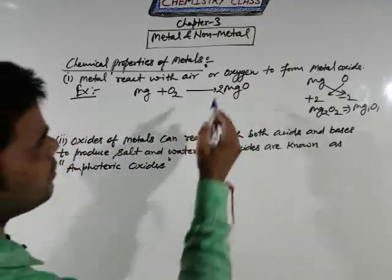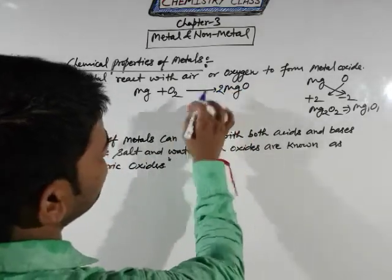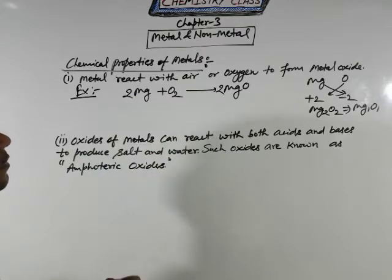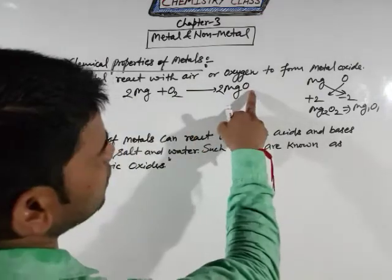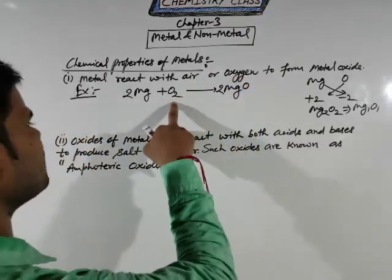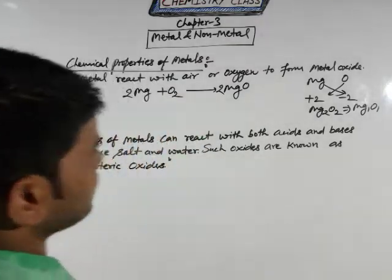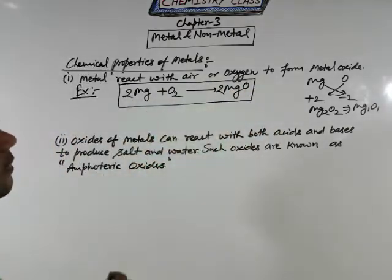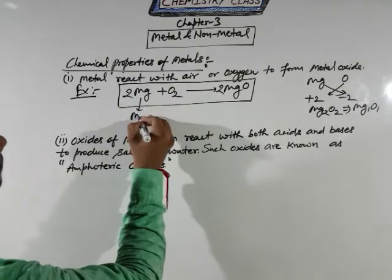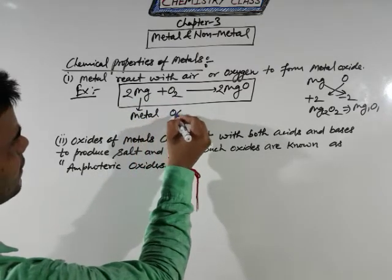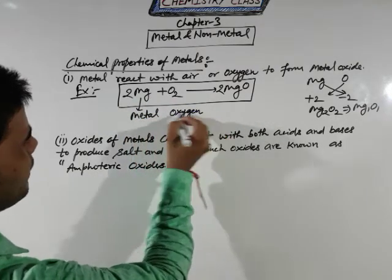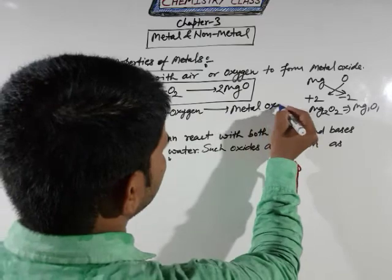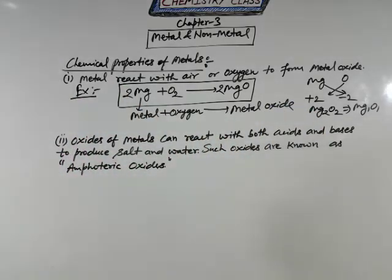You can see the last atom has an odd number. If an odd number is there, you can multiply by an even number to balance. On the right side you have 2 Mg, but on the left side you have single Mg, so multiply by 2. On the right side you have 2 oxygen atoms, and on the left side you also have 2 oxygen atoms. So this is our balanced chemical equation: 2Mg + O₂ → 2MgO.